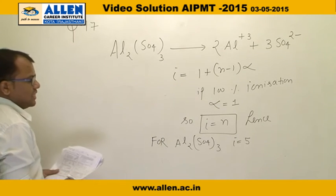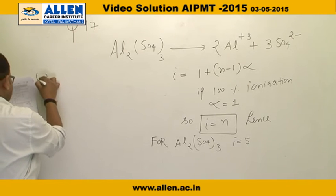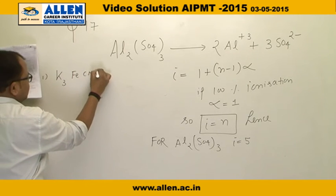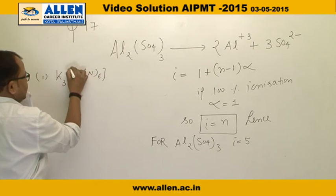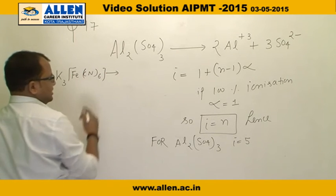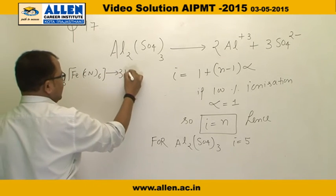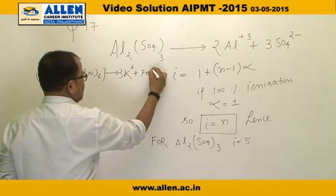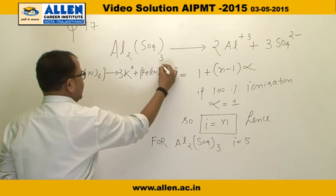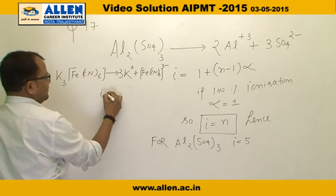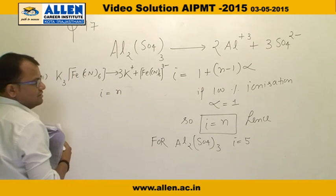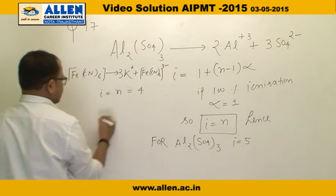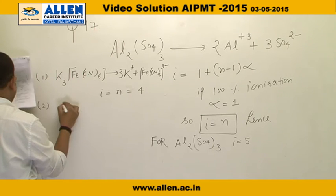Now checking option one: K₃[Fe(CN)₆]. It dissociates into three K⁺ and one [Fe(CN)₆]³⁻, giving n = 4. Since it is 100% ionized, i = n = 4. So option one gives i = 4.